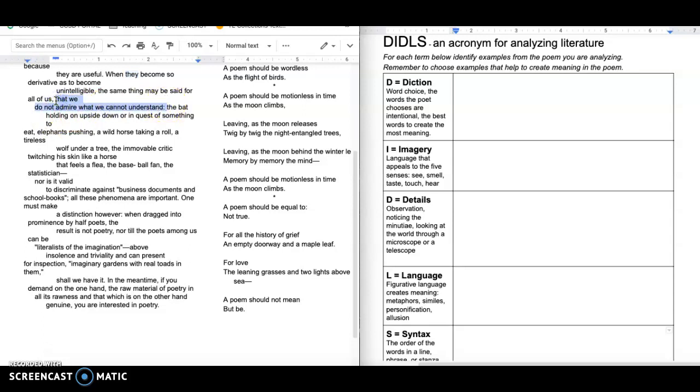That is a really interesting phrase, that we do not admire what we cannot understand. So if we don't get it, we don't like it, right? And that's exactly what's true of poetry, but that's sort of a universal truth. So if I was looking for a theme in this poem, I would say that's like all over it. We don't admire what we don't understand. When poetry is difficult to understand, we don't like it.